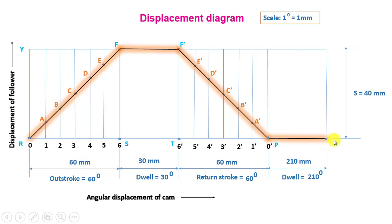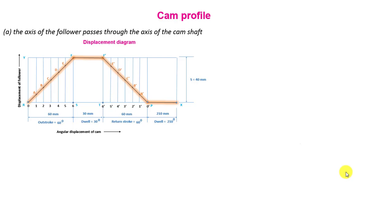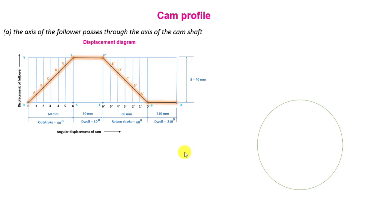This completes the displacement diagram. Now let us construct the cam profile for Case 1, where the axis of the follower passes through the axis of the camshaft. Draw a base circle with radius equal to the minimum radius of the cam, that is 50 mm. Mark the trace point R, connect it with center O, and mark angle ROS = 60° for the outstroke, angle SOT = 30° for the dwell.